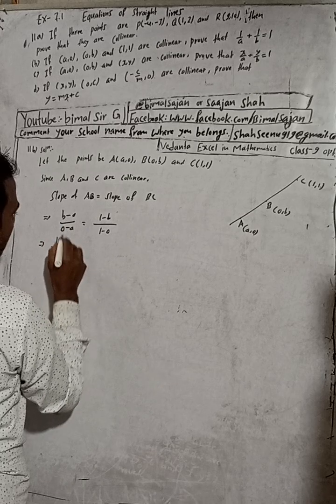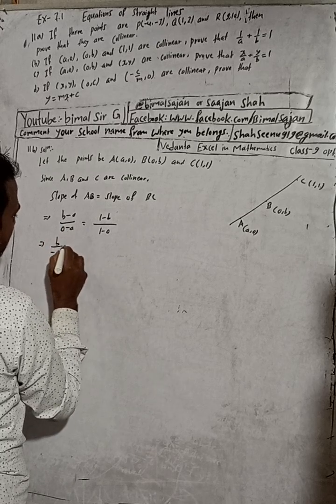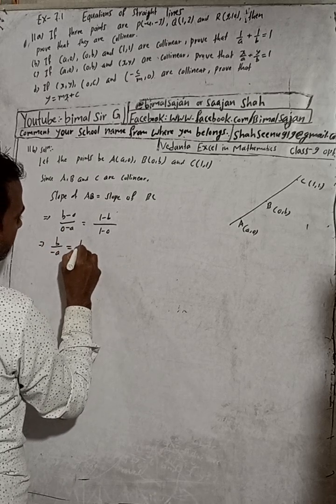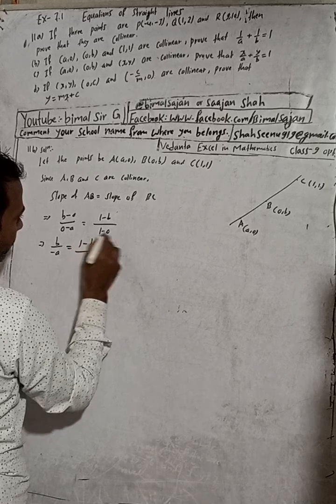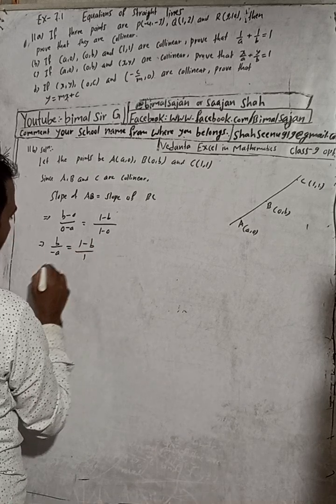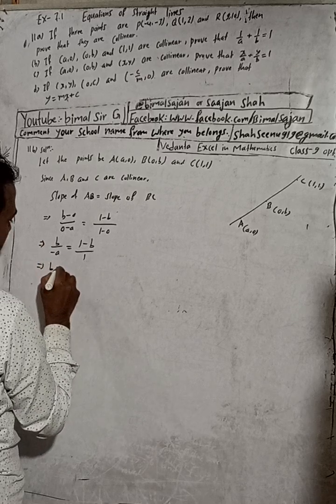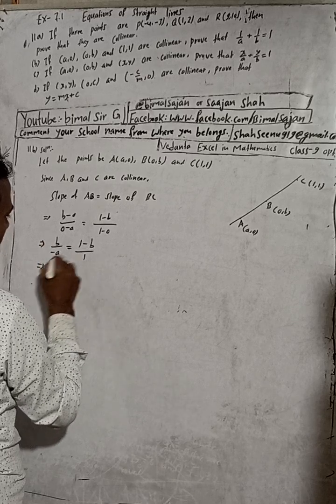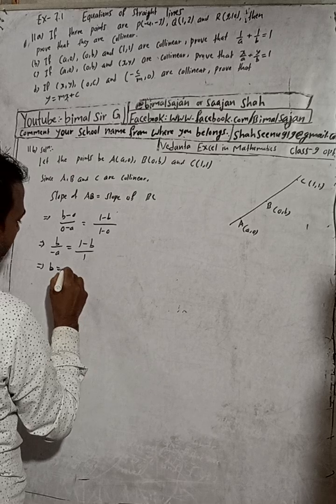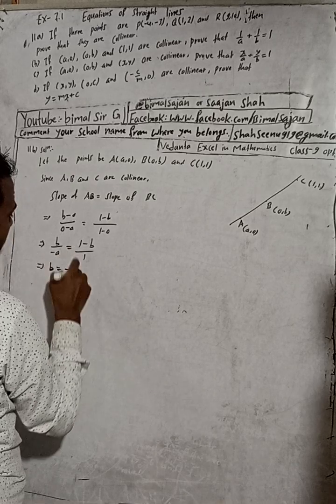b-0 is b, 0-a is -a, equals 1-b over 1-0 which is 1. So when we cross multiply, b×1 = b. Cross multiplying this side gives -a×(1-b).